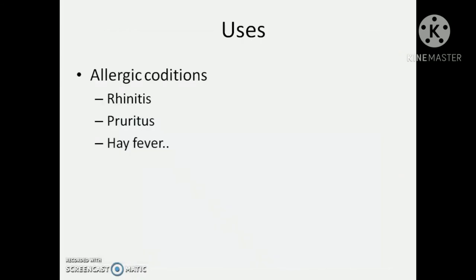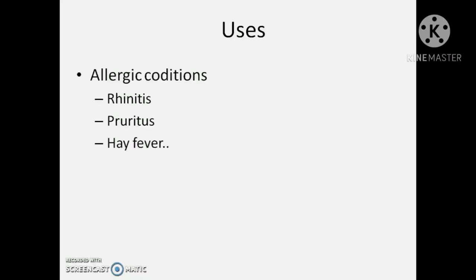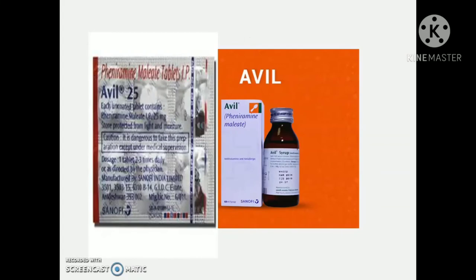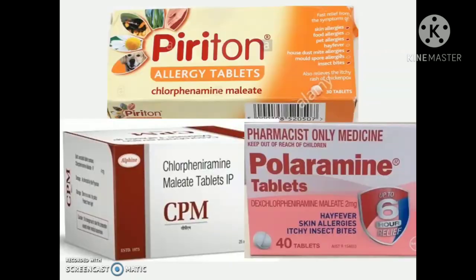The uses of Pheniramine maleate and Chlorpheniramine maleate: both are used in allergic conditions for the treatment of rhinitis, running nose, pruritus, itching, and hay fever. Common preparations include Pheniramine (brand name: Avil) and Chlorpheniramine maleate (brand names: Polyramine, Piriton, CPM, etc.).